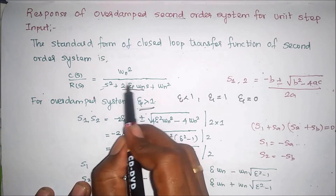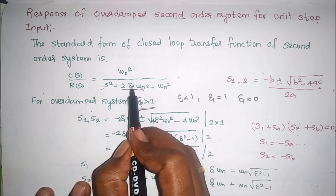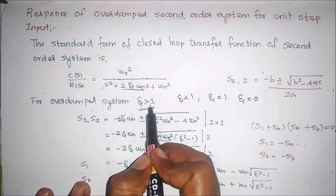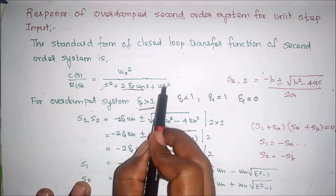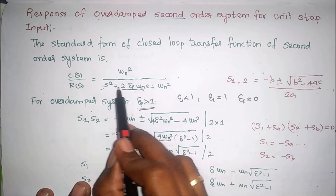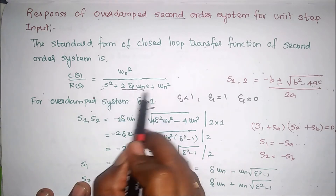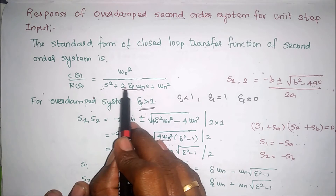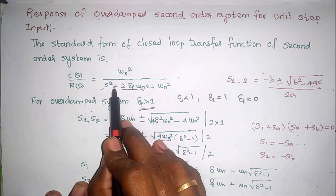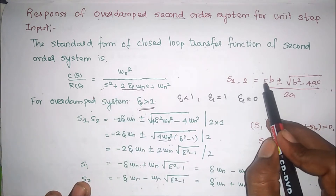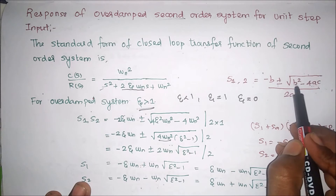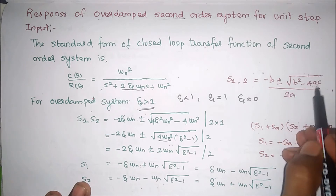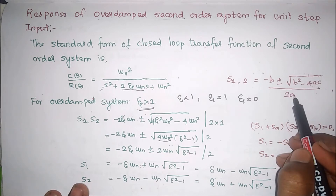Here the eta value is greater than 1. So first we have to find the roots. We know this is a quadratic equation. To find the roots we use the formula: minus b plus or minus square root of b squared minus 4ac, divided by 2a.